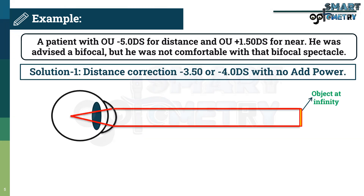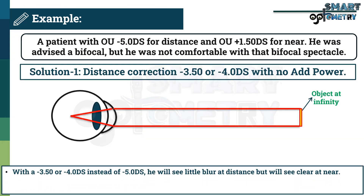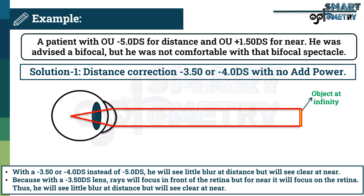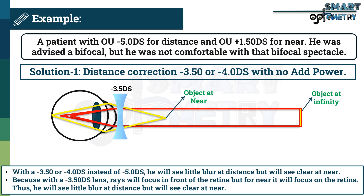With −3.50 or −4.00 diopters spherical instead of −5.00 diopters, the patient will see slightly blurred at distance but clearly at near. Because with a −3.50 diopter lens, rays will focus in front of the retina for distance, but for near they will focus on the retina. Thus, he will see slightly blurred at distance but clearly at near.